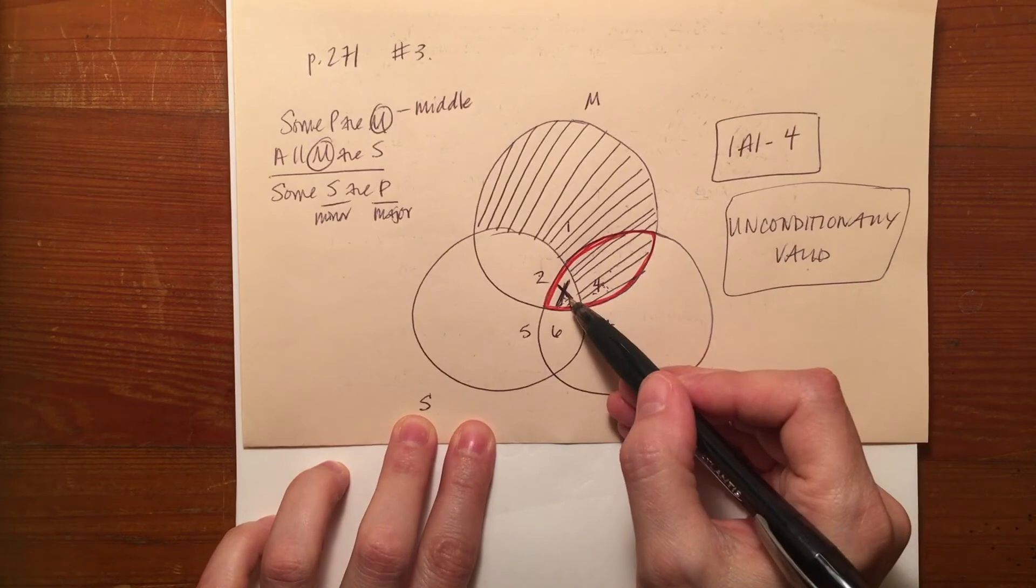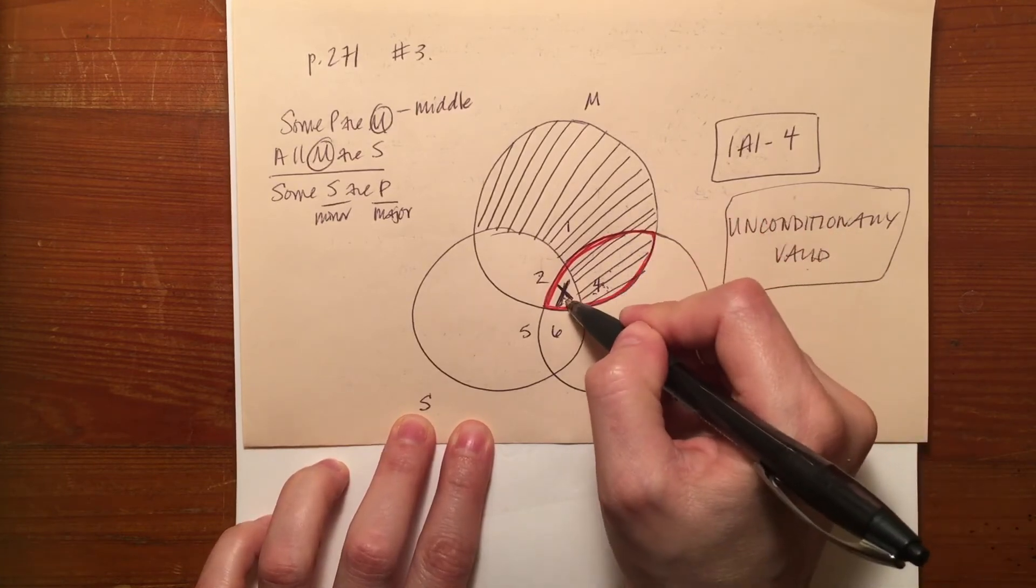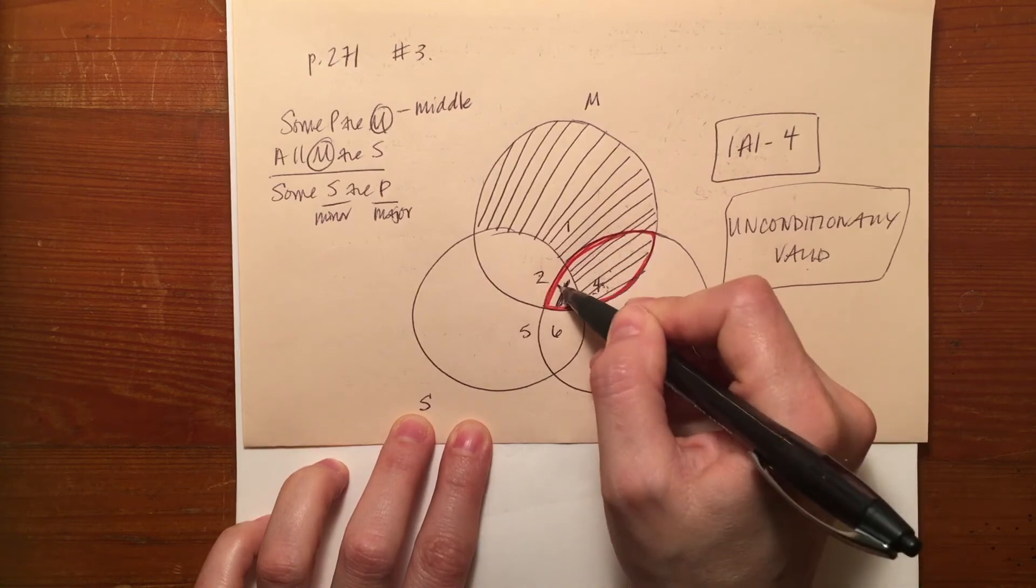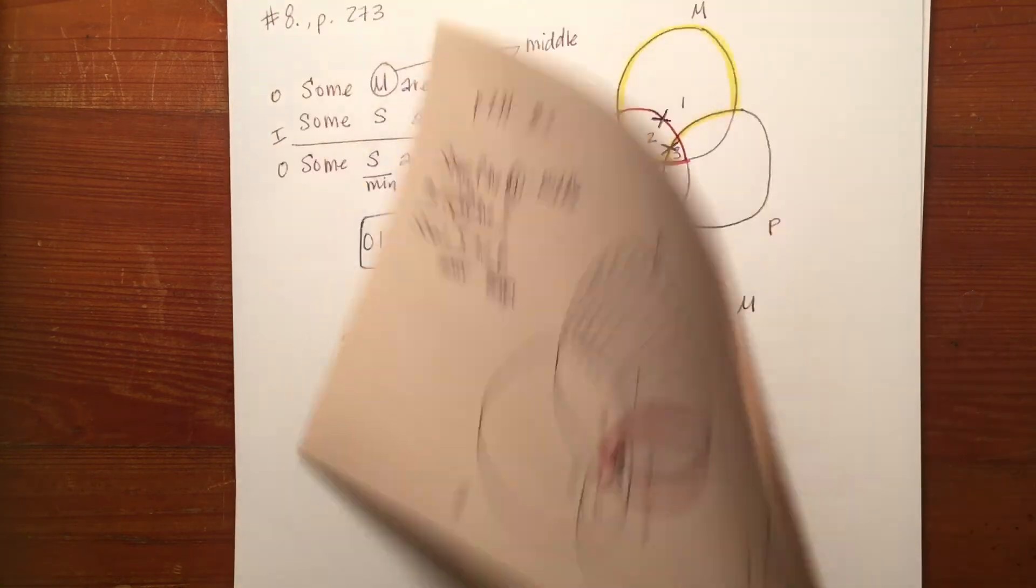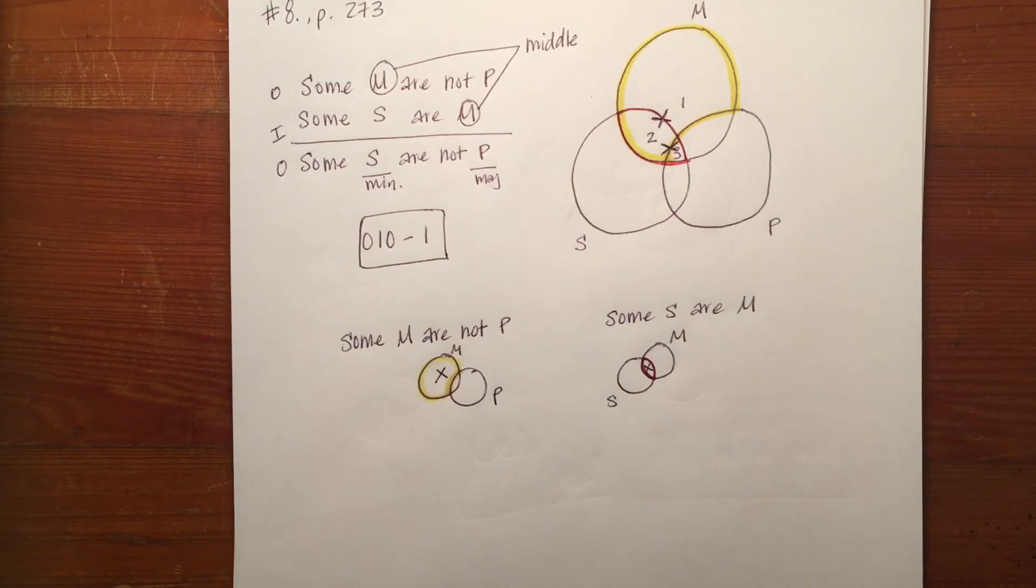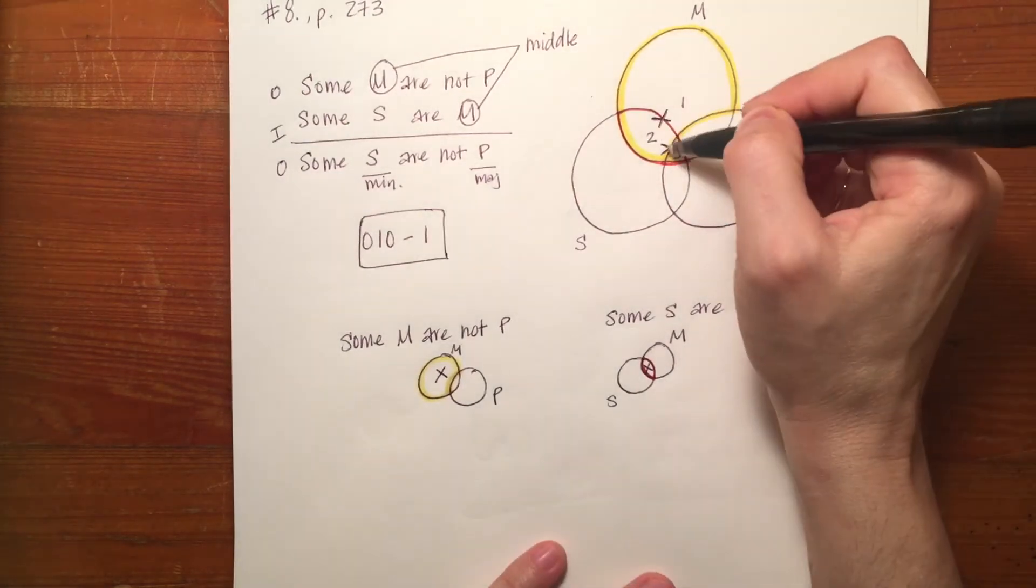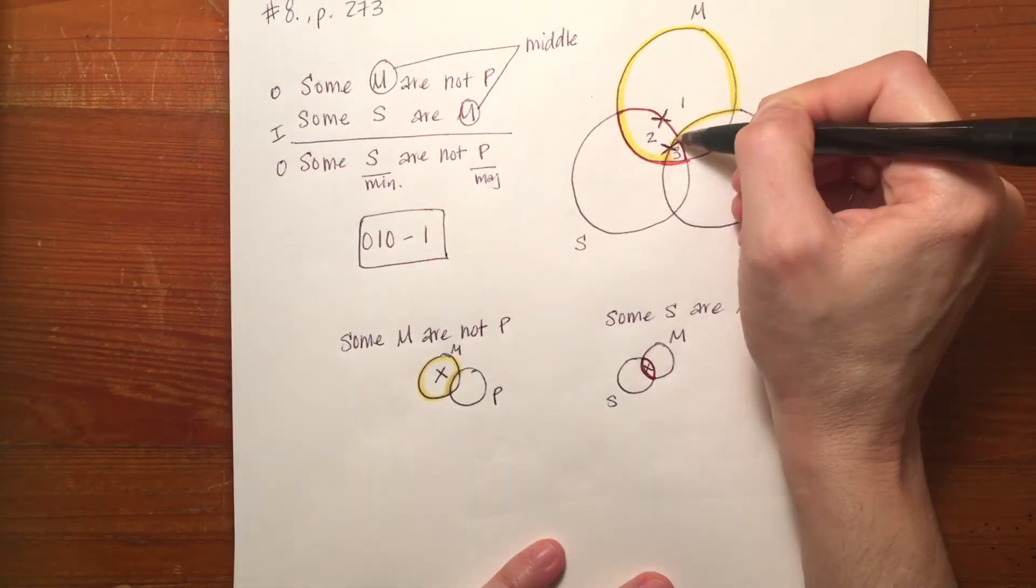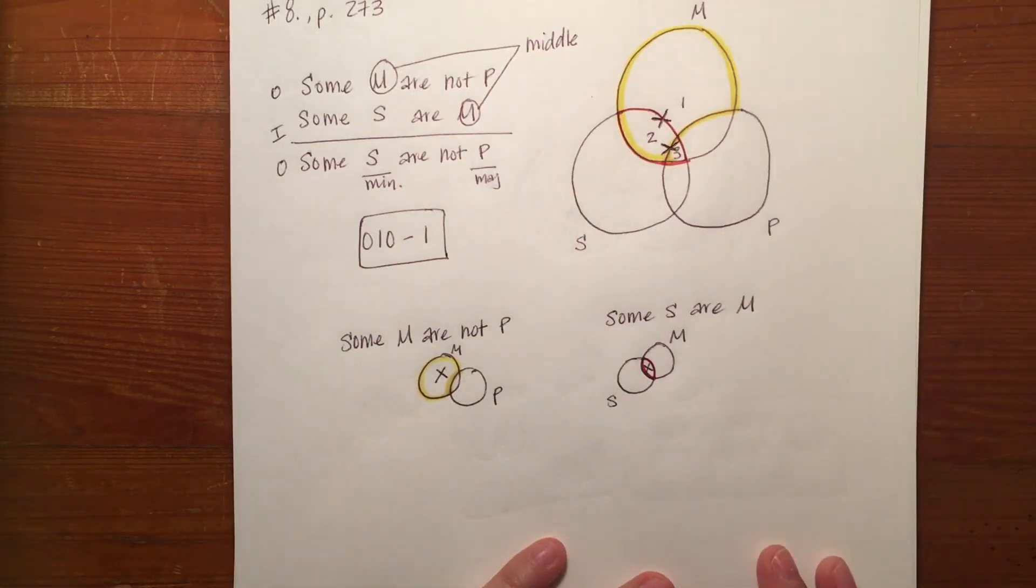The X went in the open spot because even though it took up the spaces of three and four, four was already shaded. We put the X in the open spot. When there is no open spot, or rather when the whole thing is open, we put it on the line of the third circle that's bisecting it or dividing it into two.